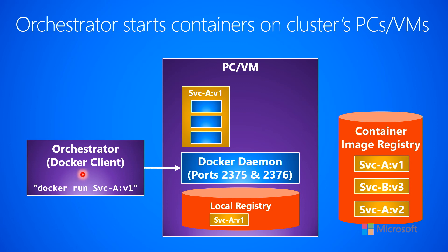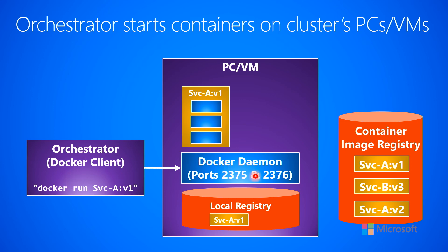In the future, you might want to run another service, possibly on the same VM. The orchestrator might say it wants to run a different service. Again, the request is made to the daemon, the daemon checks the local registry, doesn't see it, goes out to the container image registry, downloads it, and then starts it up. If a container went down, crashed, or was purposefully scaled down and the container went away, then if you decide to scale up in the future, the orchestrator could tell the Docker daemon to create another container with that image.